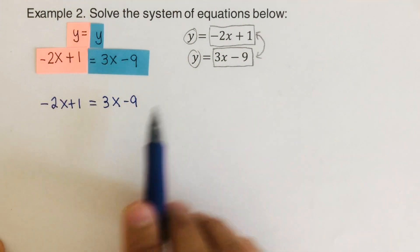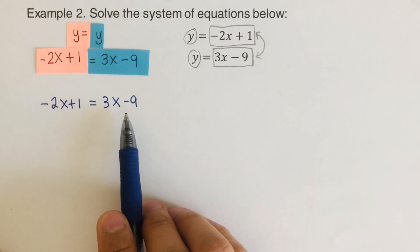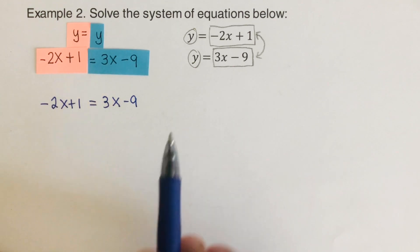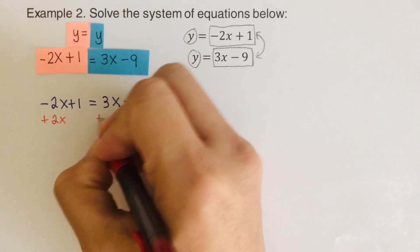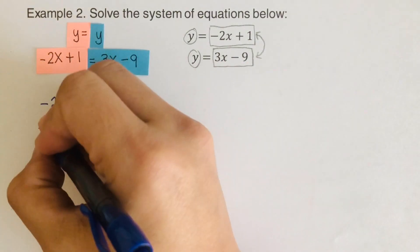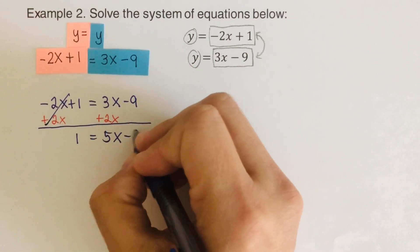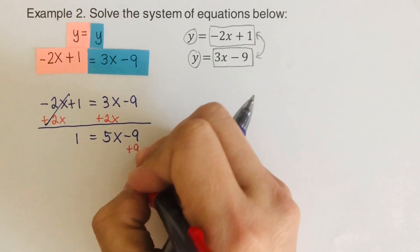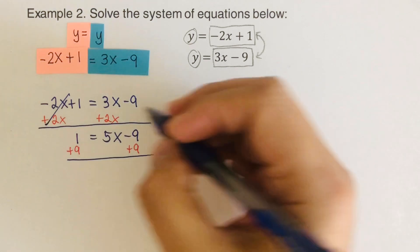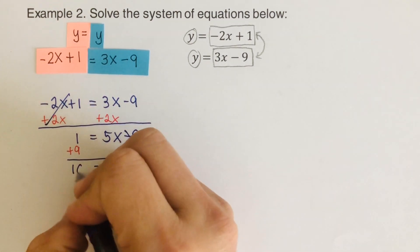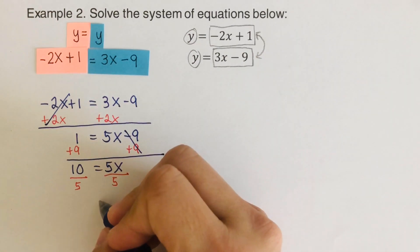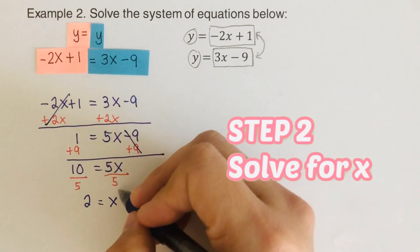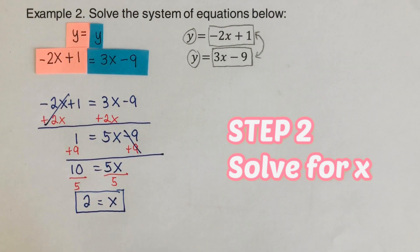Some may ask: can we switch it around and write 3x minus 9 on the left side? Yes, you can — it doesn't matter because they're equal. From here, we add 2x to both sides, leaving us with 1 equals 5x minus 9. Then we add 9 to both sides, giving us 5x equals 10. Dividing both sides by 5, our x equals 2. That's step 2 — we solved for x.